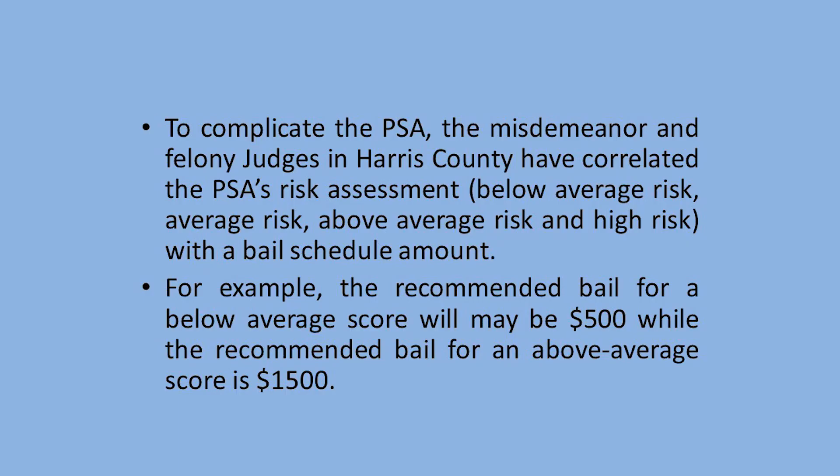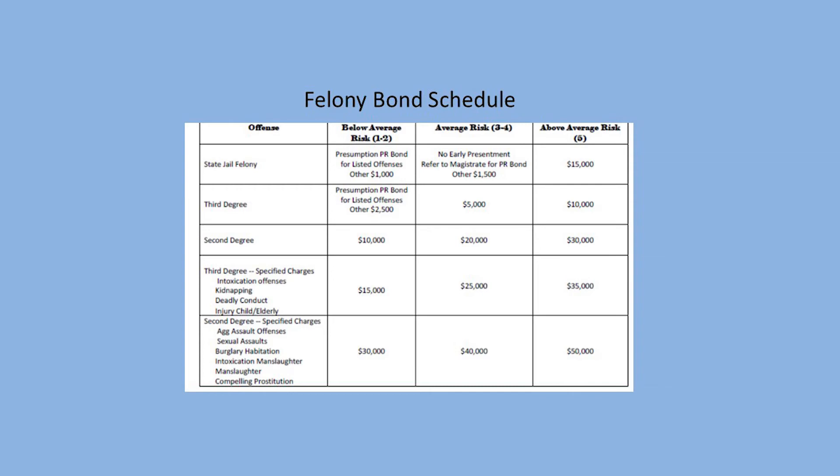To further complicate problems in Harris County, the misdemeanor and felony judges have a bail schedule that they have correlated to the PSA scores. Whereas the PSA is just supposed to provide the nine factors and give the judge a risk level — below average, average, above average, or high risk — the judges have decided that if a person is below average risk on a Class B misdemeanor, the recommended bail is $500, and if they're above average risk, it may be $1,500. They are correlating a bail amount with the risk levels, and the Arnold Foundation specifically says they aren't supposed to do this — the PSA is not meant to recommend a bail amount.